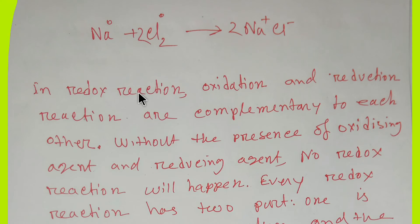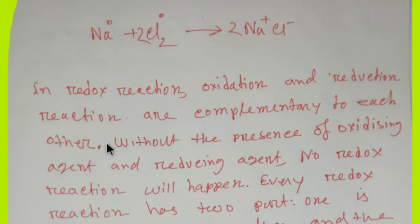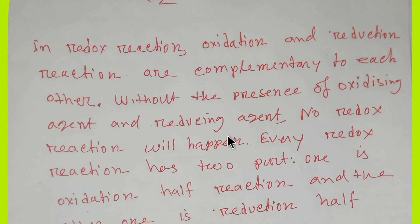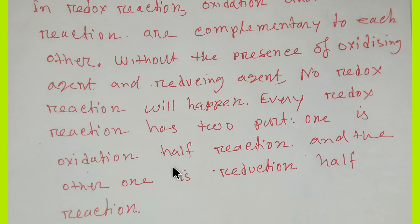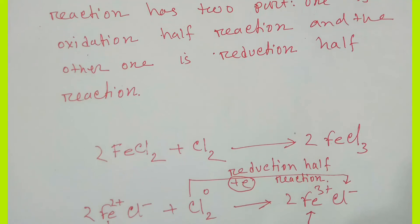Sodium plus chlorine gives sodium chloride in a redox reaction. Oxidation and reduction reactions are complementary to each other. Without the presence of an oxidizing agent and a reducing agent, no redox reaction will happen. Every redox reaction has two parts: one is the oxidation half-reaction and the other is the reduction half-reaction.